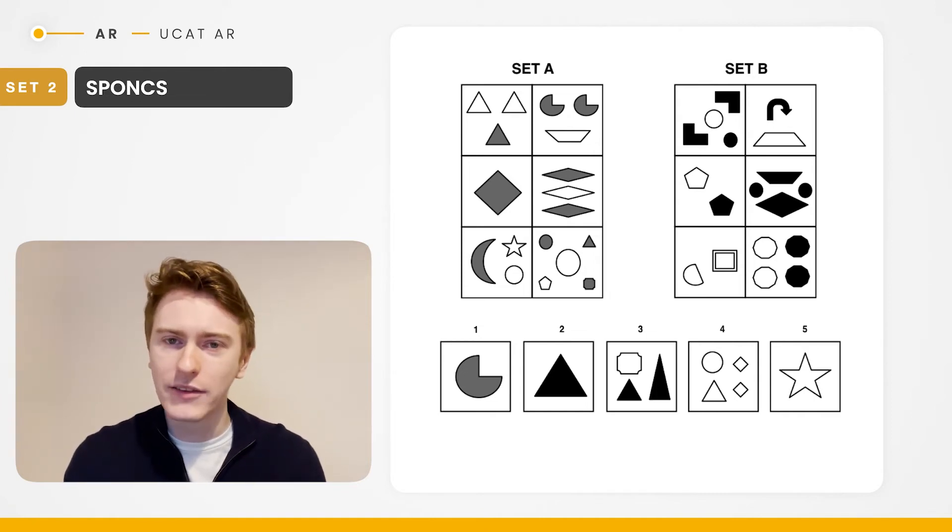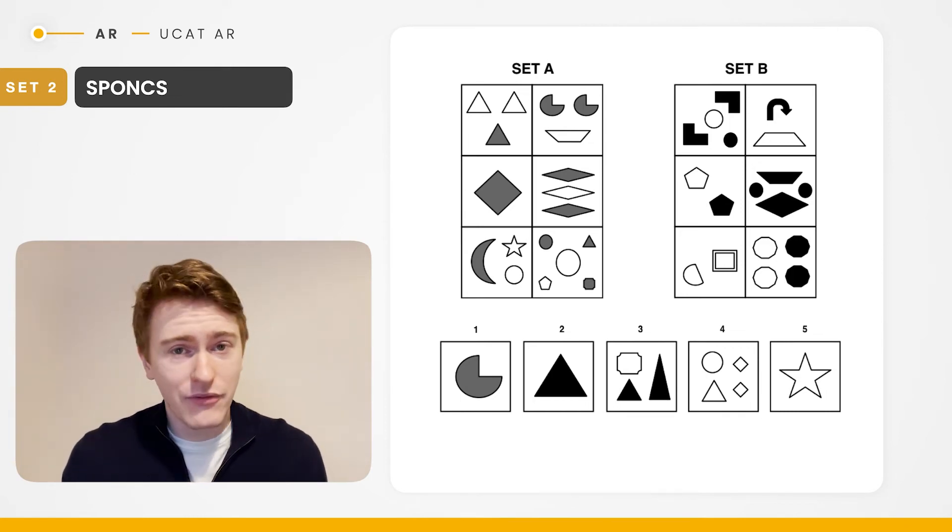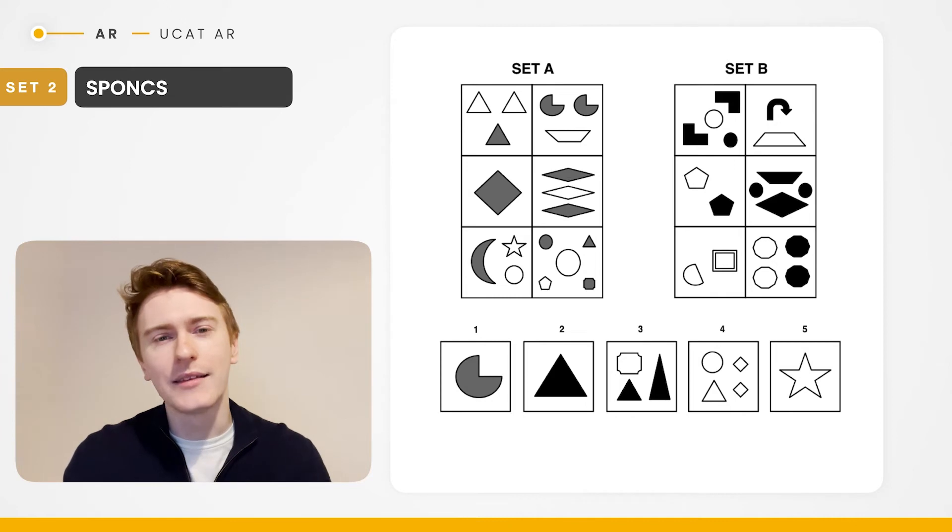So you can see in set A, all of the shapes are either white or grey, whereas in set B, all of the shapes are either white or black. Now clearly if you have a single white shape that can belong to set A or set B, therefore it's not a differentiator. That's why it's a secondary pattern. The odd and even differentiates whether it goes to set A or set B. The colour is like a final check.